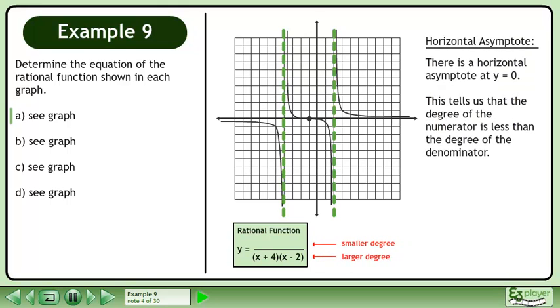There is a horizontal asymptote at y equals 0. This tells us that the degree of the numerator is less than the degree of the denominator.